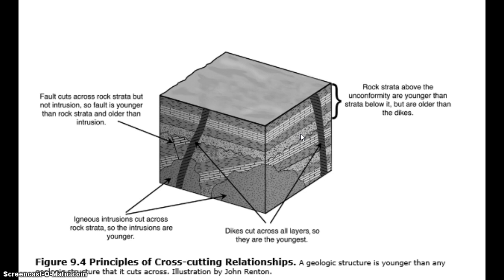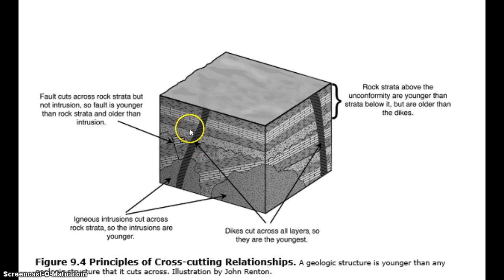Below these four rock units is an angular unconformity, indicated here with this line. Recall that an unconformity is missing time in the rock record. In this particular case, it is an angular unconformity because the rocks below were tilted — you can see these rocks that are tilted — then eroded, which led to the unconformity, before the four topmost rock units were later deposited.